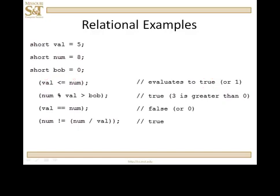Okay, what about num mod val? Well, num is 8 and val is 5. So, how many times is 5 going to 8? One time and the remainder is 3. So, is 3 greater than bob? Bob is 0. The answer is true, 3 is greater than 0.